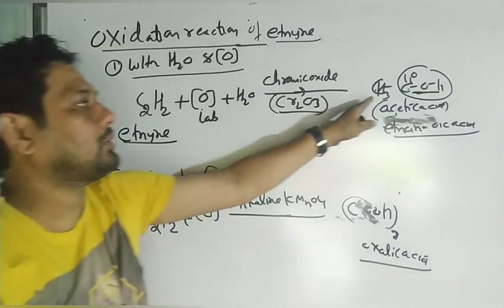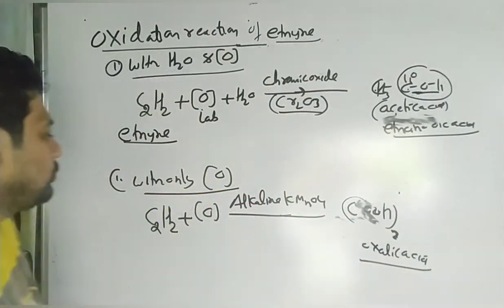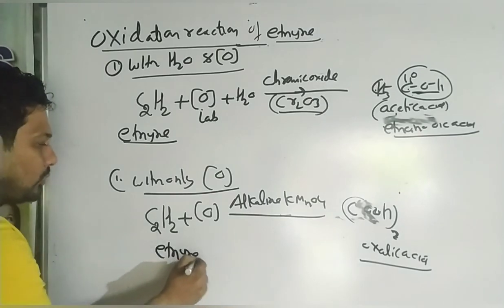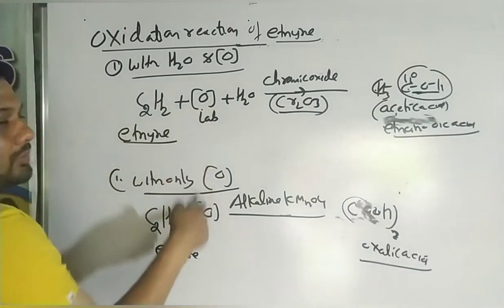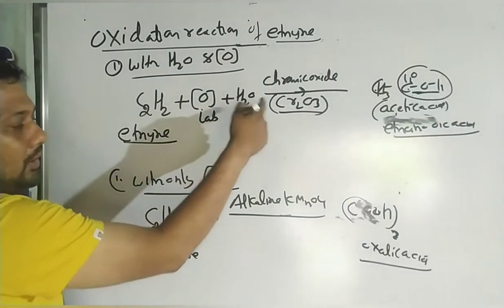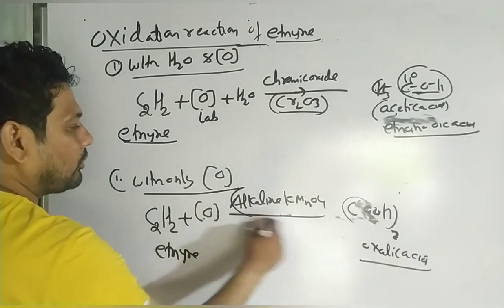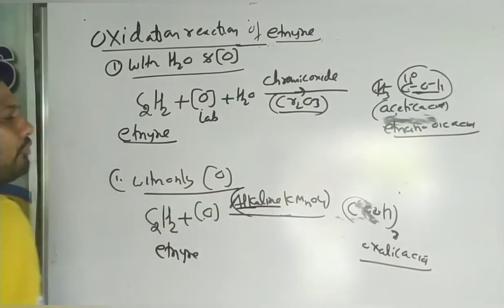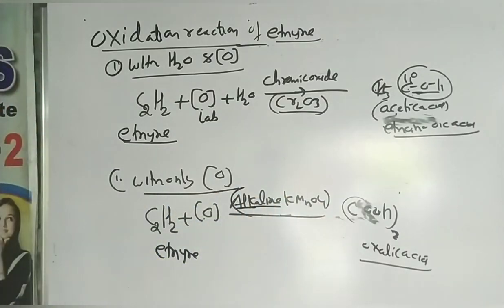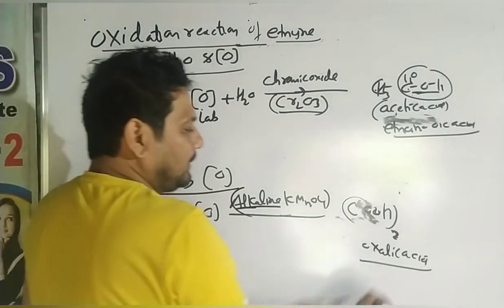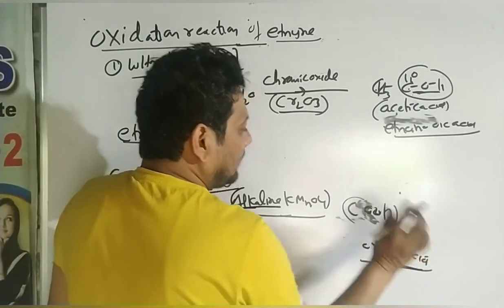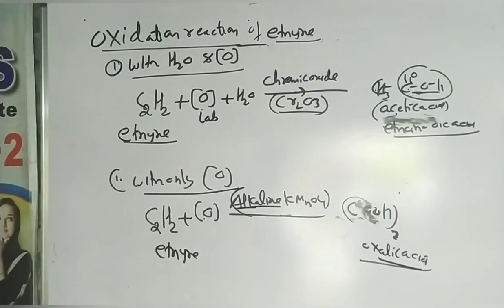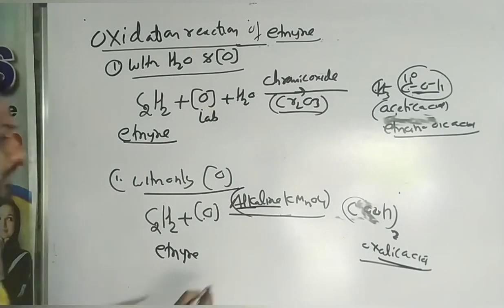This is worth one mark — note it. In the same way, if ethyne reacts with only oxygen and alkaline KMnO4 — alkaline means basic KMnO4 — a new compound oxalic acid is formed. So the addition reaction is the most important reaction: with H2, Cl2, Br2, HCl, HBr — triple to double, double to single.